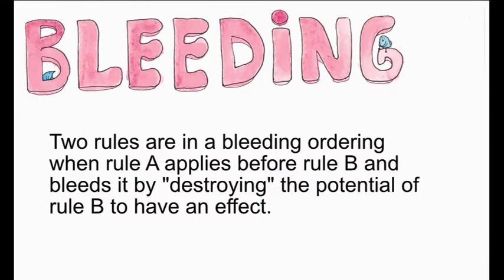Now, let's have a look at bleeding. Two rules are in a bleeding ordering when rule A applies before rule B and bleeds it by destroying the potential of rule B to have an effect.